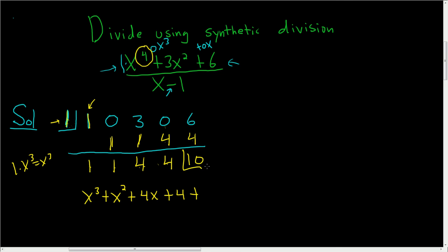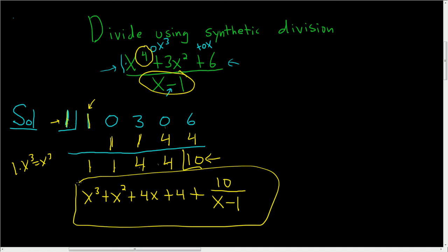Plus, and then the remainder. The remainder here is 10. And then all divided by what's called the divisor, so this piece right here, x minus 1. And that's it. That's how you use synthetic division.